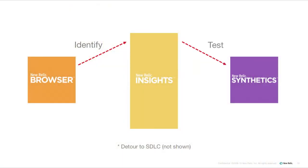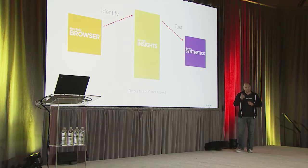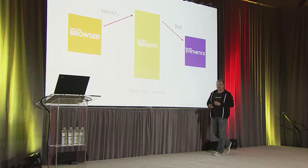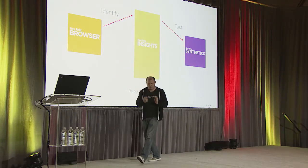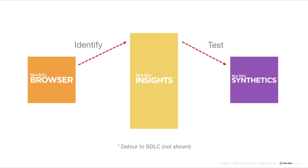You're going to take that target list and configure some synthetic tests — simple browser tests. If I identify an externally accessible page from my analysis of the browser data, it's a simple browser test, a five-step process at best. The schedule determines how much data I'm collecting, and that's going to be important, because when we go back into insights, synthetics data is constantly being pushed into insights.